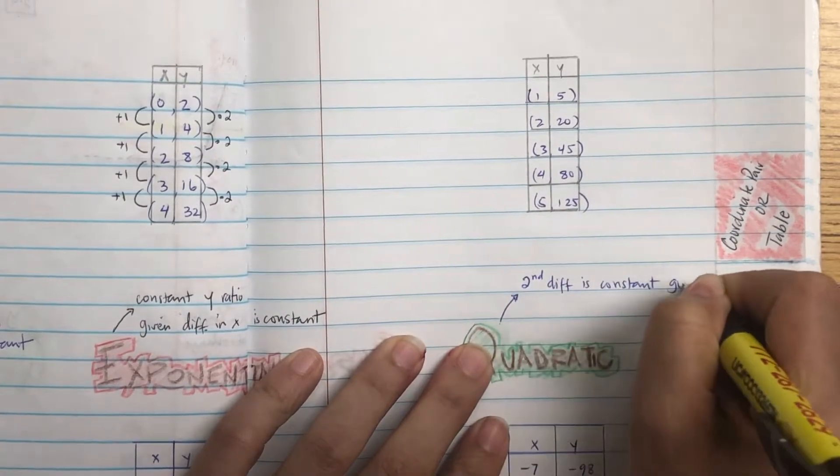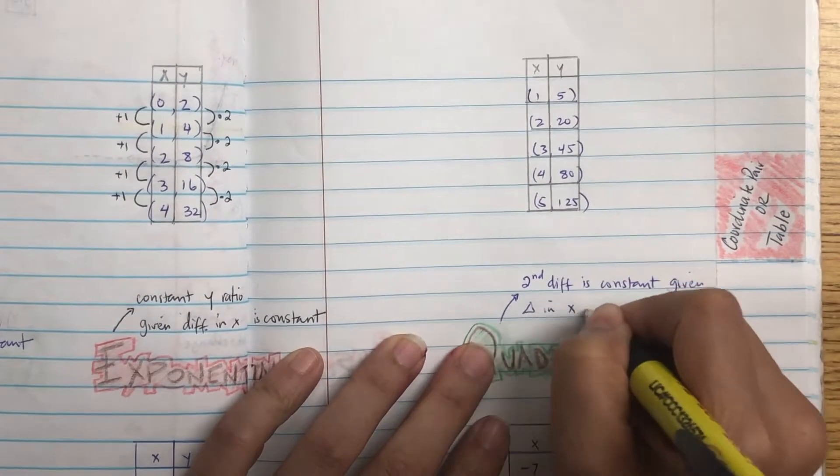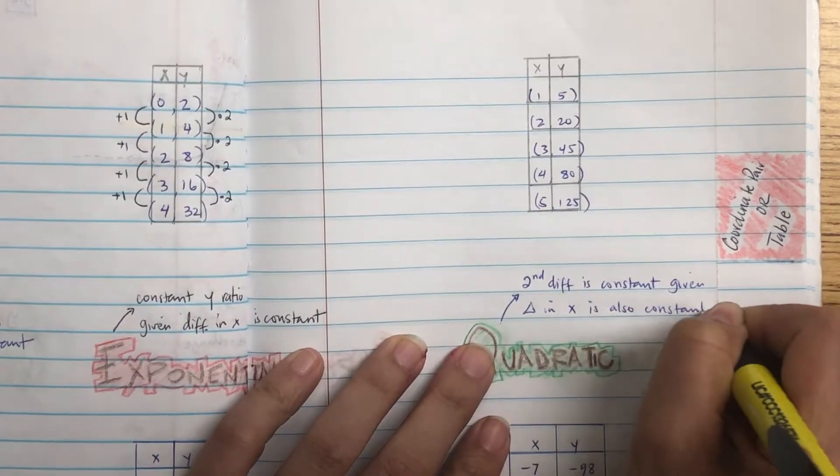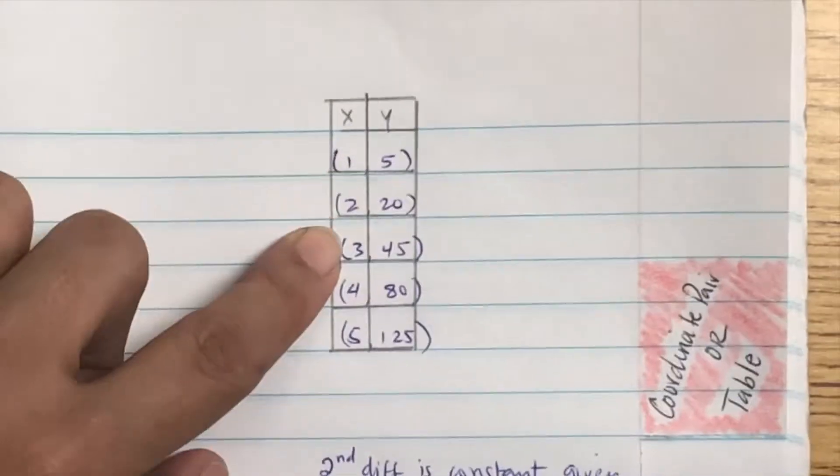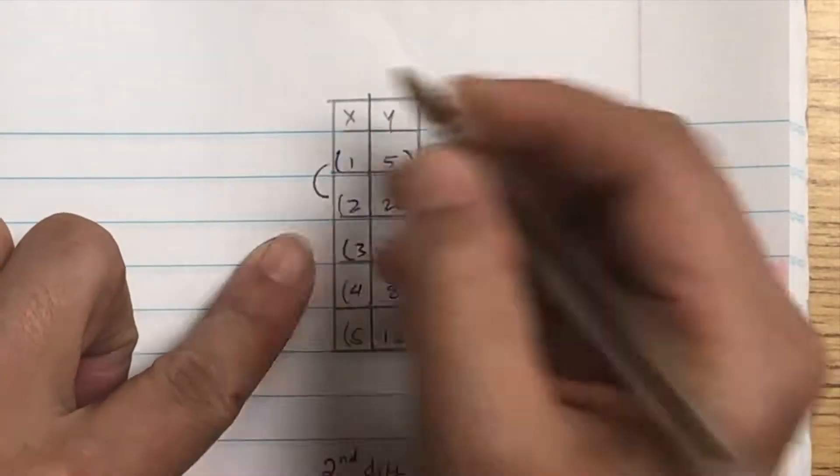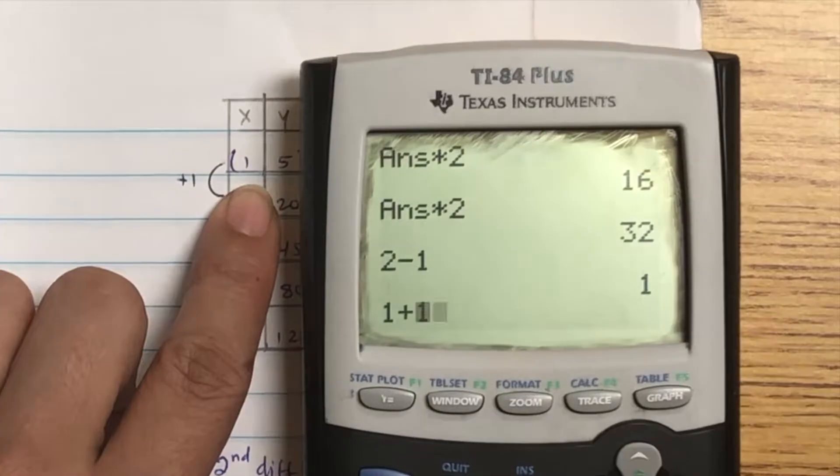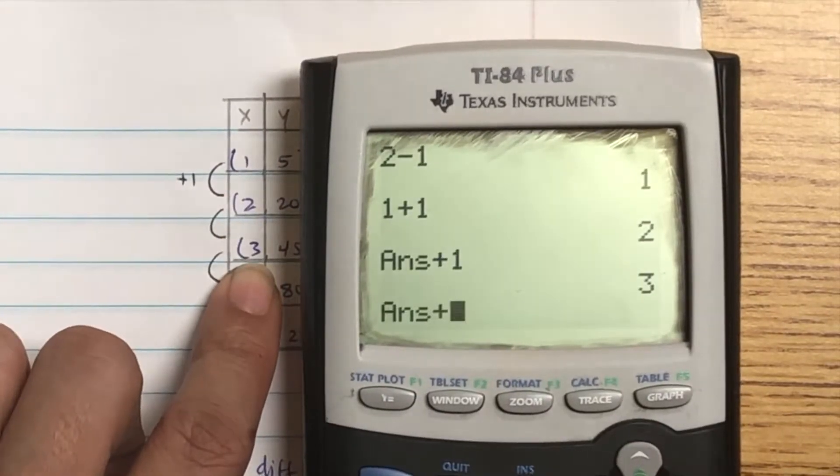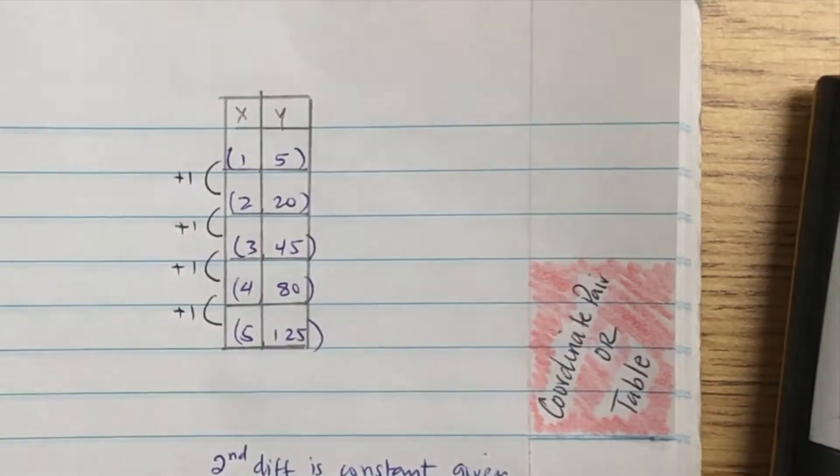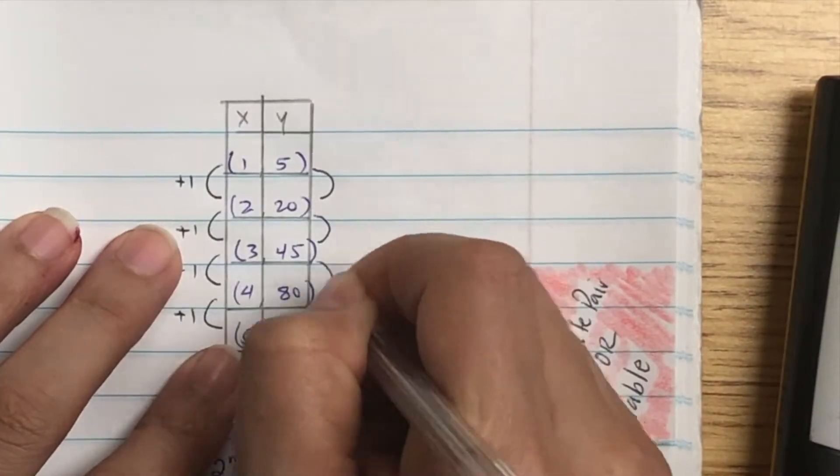For quadratic, the second difference is a constant given the change in X is also a constant. So for all of these, anytime you have the table, the change in X has to be constant. We can check the second number minus first one. So let's see, 2 plus 1, is that going to be the next number? Yes, it is. 3 plus 1, 4 plus 1, so it all changes by 1.